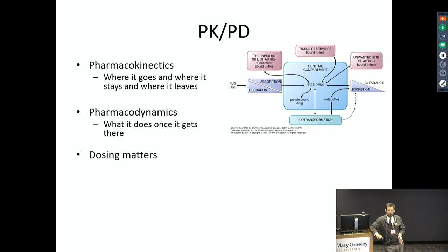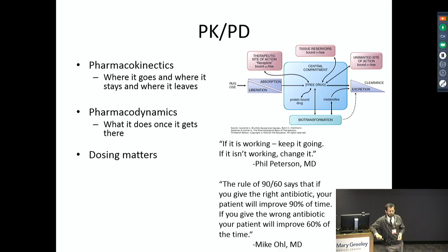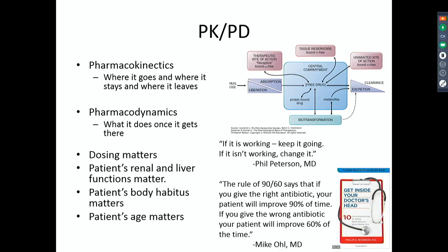It is important to know that if you give the wrong dose of an antibiotic, it won't work or it will cause toxicity. Kidney function matters, liver function matters, patient's obesity matters, and age matters. When we decide if an antibiotic is active, we do testing in a lab against the bacteria. Each bacteria has a concentration of antibiotic in the blood above which the bacteria doesn't grow or dies. If we partially expose the bacteria but not fully, the bacteria can develop resistance over time. If we give too much, people can get toxicity.